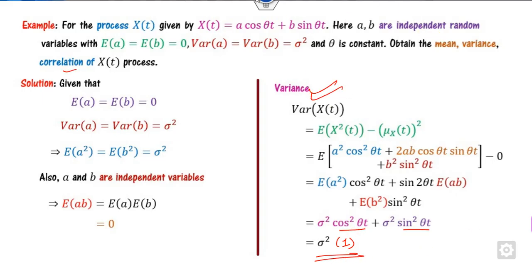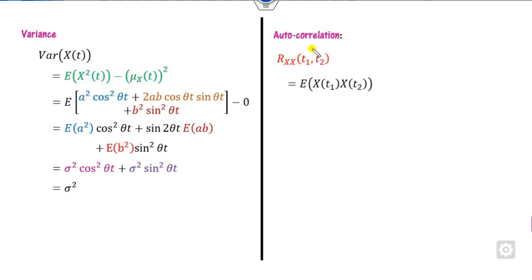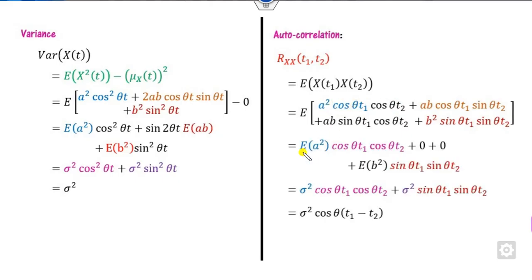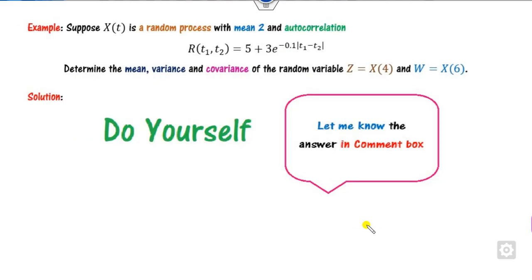How do you find the correlation? Starting with E[x(t1)·x(t2)], substitute x(t1) and x(t2) and multiply them. The constant part θ is taken outside. E[a²] = σ², E[ab] = 0, E[b] = 0. Taking σ² common, the result is σ²·cos(w(t1−t2)), similar to the previous example. You can verify this yourself and let me know the answer in the comment box.